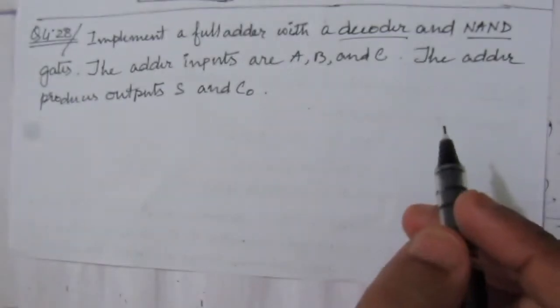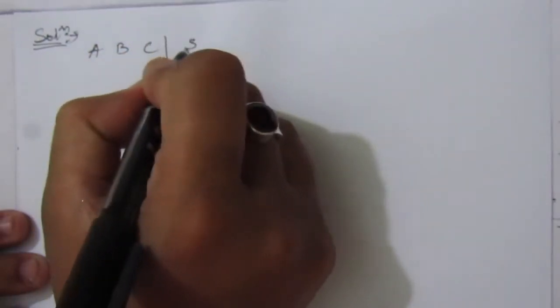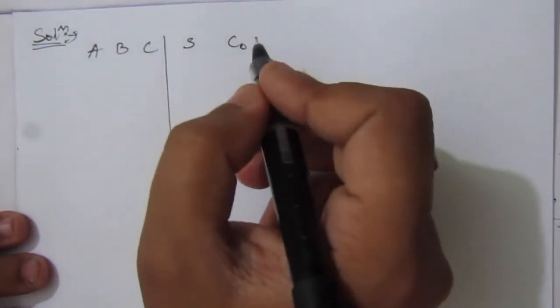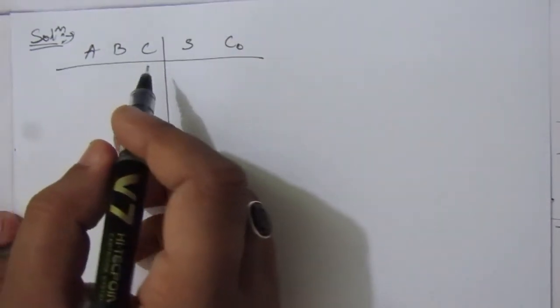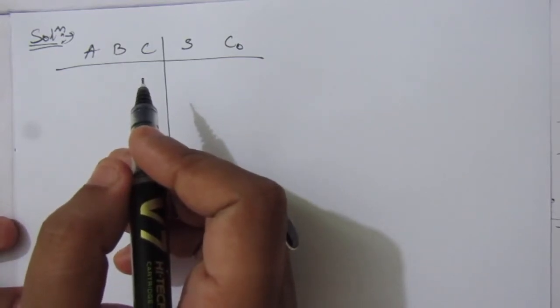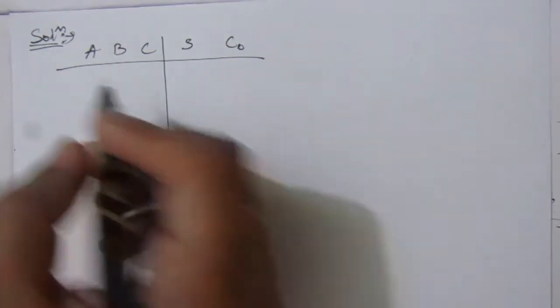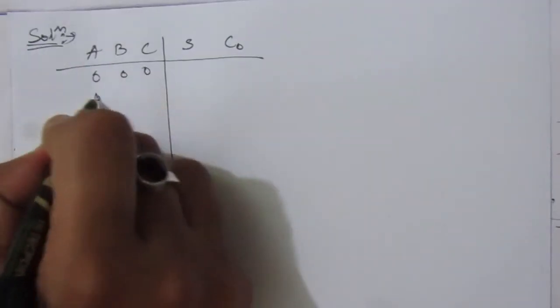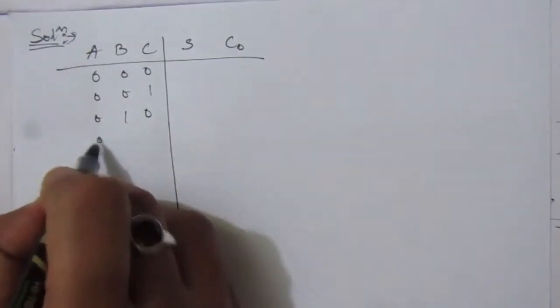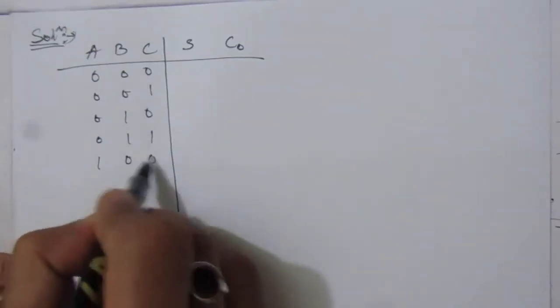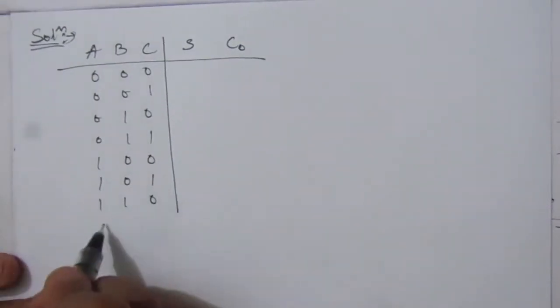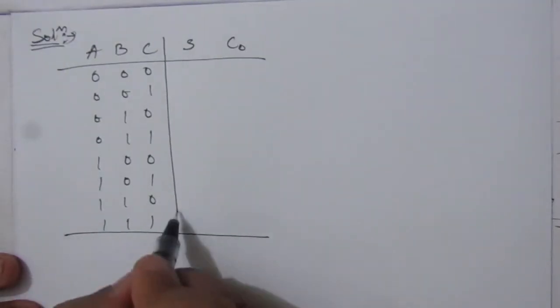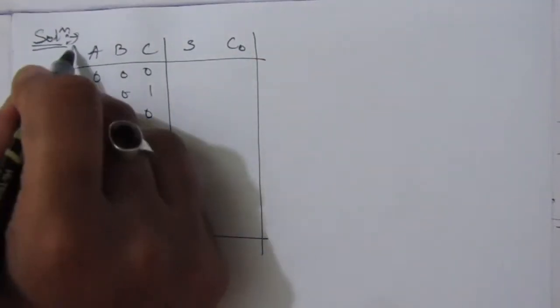To implement a full adder using a decoder and NAND gates, we first make the truth table. We have three inputs A, B, and C, and the outputs are S (sum) and C_out (carry out). For three-bit input, we have eight combinations from 0 to 7, that is 000 to 111.